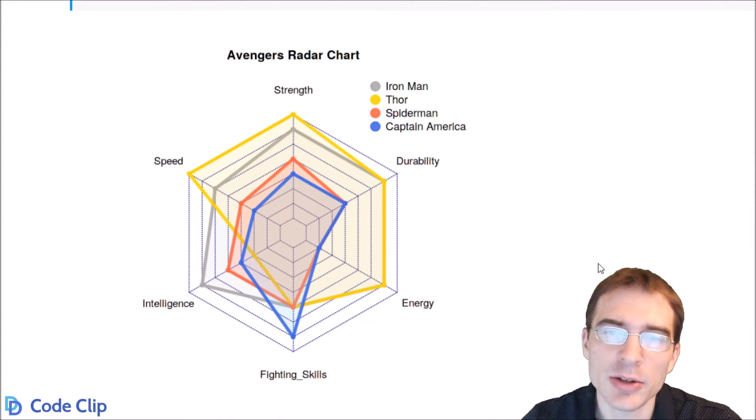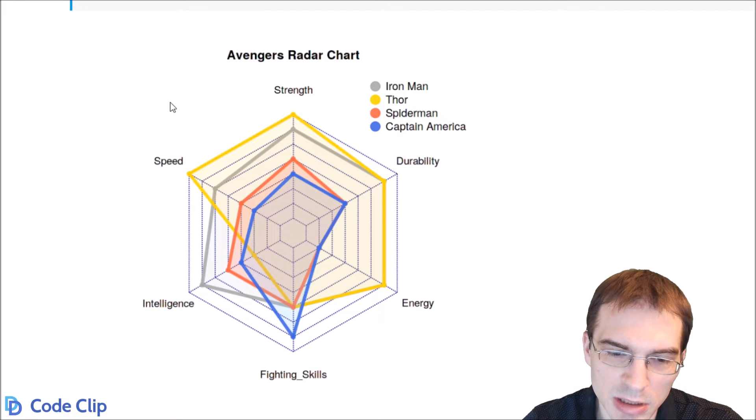You can see here we did manage to create another radar chart, this time with different characters overlaid. And we can inspect this a little bit and see that Thor seems to have the highest overall stats. He even has max speed and strength.